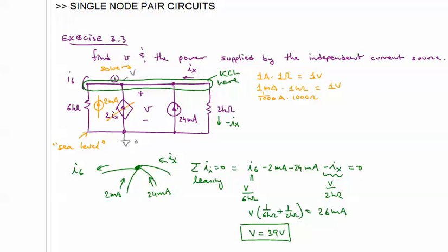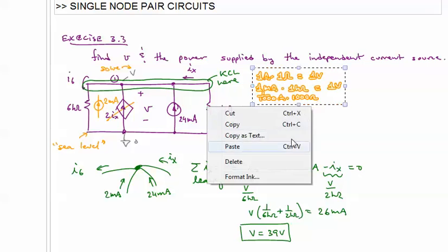Okay, we want to return to the single node pair circuit and re-solve it, but this time actually dealing with the dependent current source.